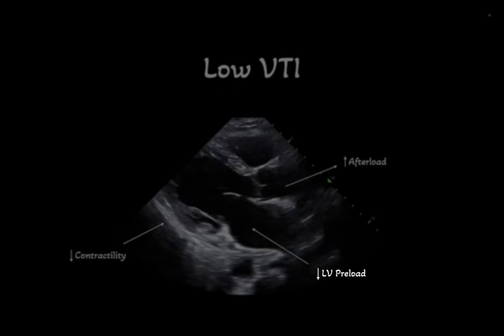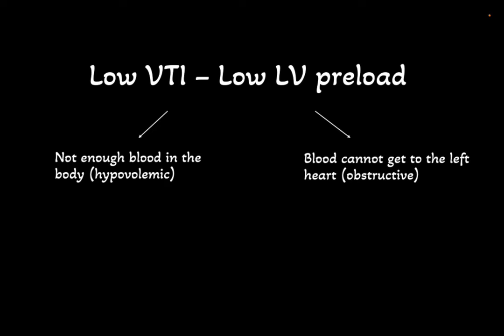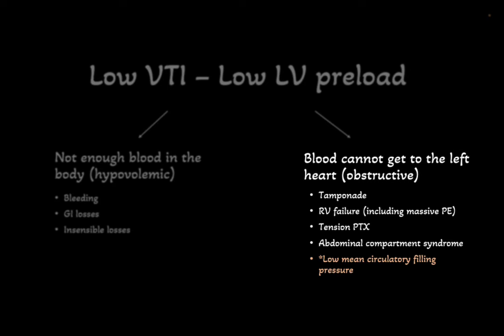One of the causes of a low VTI is due to a low LV preload. This can be broken down into two causes: A) there is not enough blood in the body, which is akin to hypovolemic shock, or B) there is enough blood but it cannot get to the left heart, which is akin to obstructive shock. Causes of hypovolemia include bleeding, GI losses and insensible losses. On the other hand, causes of obstructive shock include tamponade, RV failure which would include a massive PE, tension pneumothorax, and abdominal compartment syndrome.